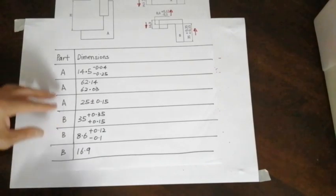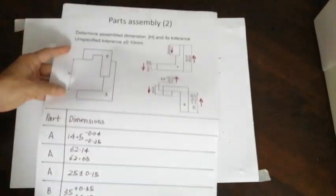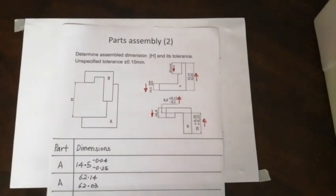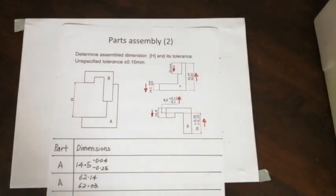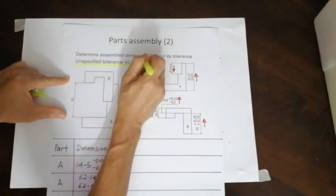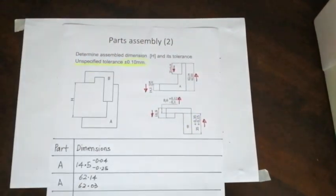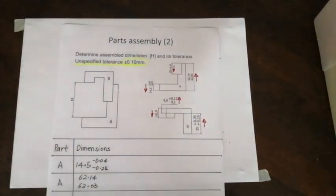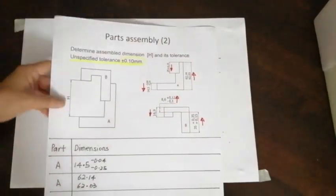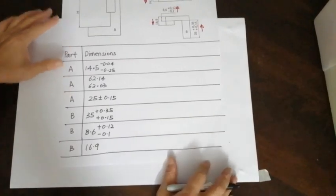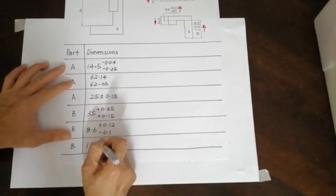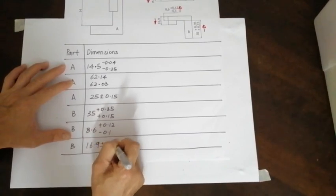It doesn't have a tolerance for B. So let's see what it says. Can you see, notice the note there? It says that unspecified tolerance is going to be plus and minus 0.1. Simply means that this is unspecified. The last one is unspecified. We will put it as plus and minus 0.10.